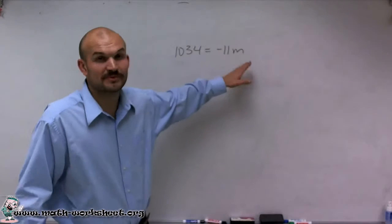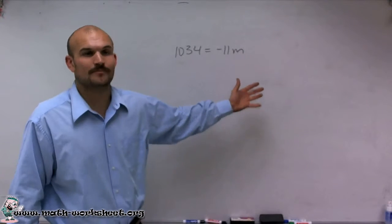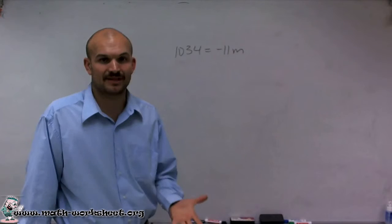So I'm going to look at my variable, which I'm going to want to isolate, get by itself. But right now, it's not by itself. It's being multiplied by negative 11.